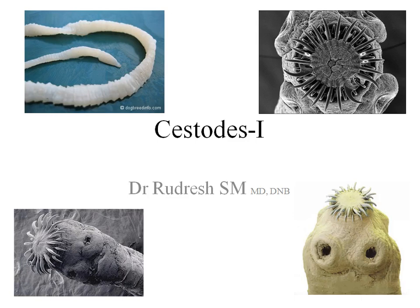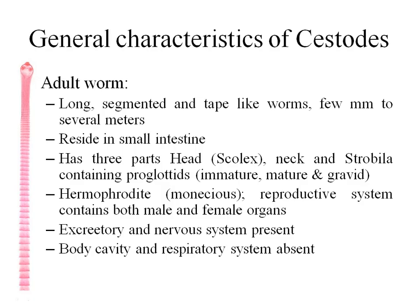Today we will discuss Cestodes, explained in two sessions. We'll cover general characteristics and morphology of the adult form. Cestodes are tape-like worms which are dorsoventrally flattened, long, and segmented. Their measurement varies from a few millimeters to several meters. They usually reside in the small intestine and have three parts: the head called the scolex, the neck, and the strobila. The strobila contains the proglottids.